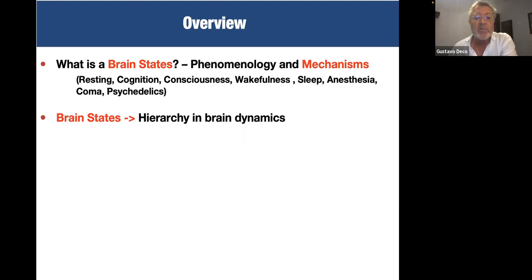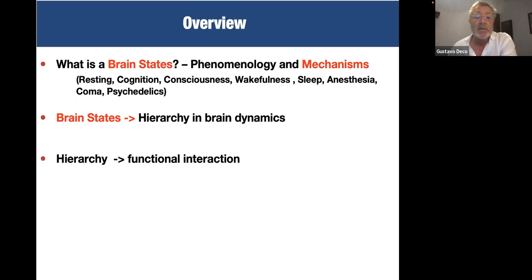The particular answer we are trying to follow is to assume that one aspect that could distinguish a brain state is the hierarchical organization of brain dynamics — the functional hierarchical organization of brain activity — and perhaps the way different regions organize and orchestrate other regions. This hierarchy changes radically across brain states: resting, sleep, anesthesia, or under execution of different cognitive tasks.